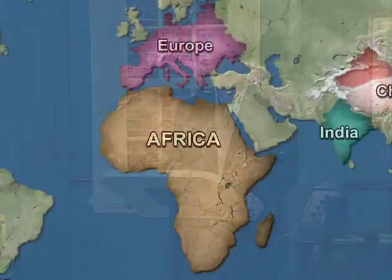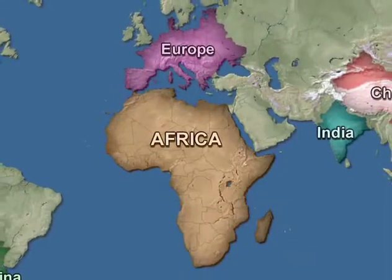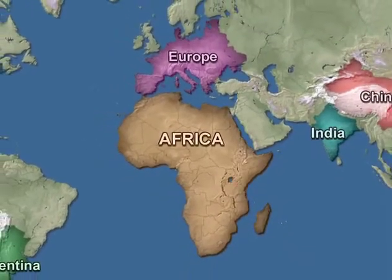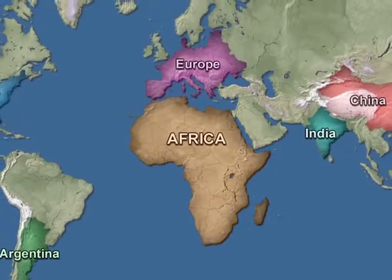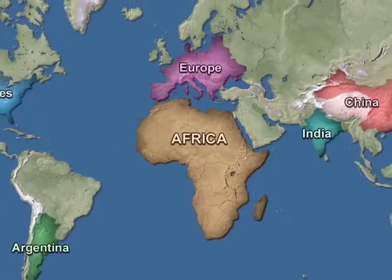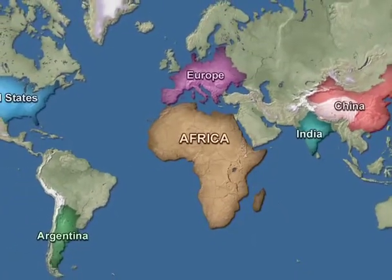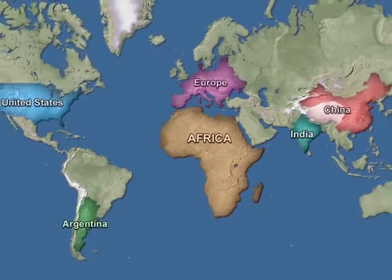Africa, first of all, has room for variety. The place to begin this discussion, it seems to me, is with the sheer size of the continent. Africa is the second largest of the continents. It occupies something like 25% — about a quarter — of the Earth's total land mass.